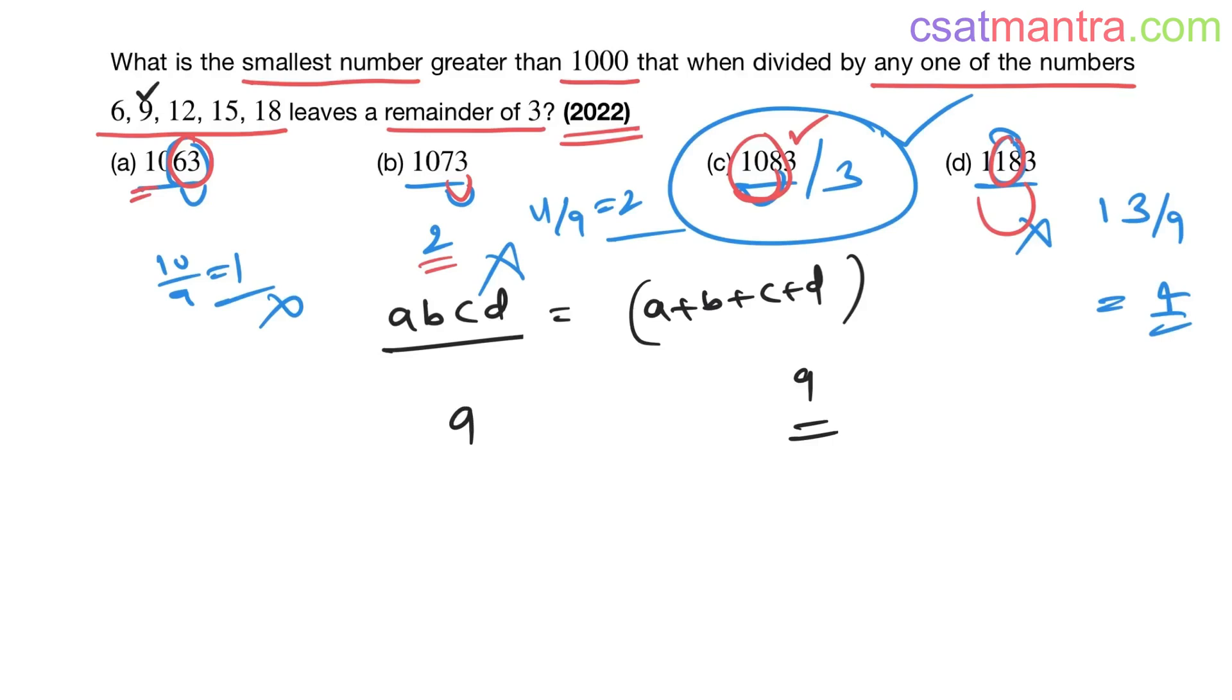Now find the LCM. 6 is 2 × 3, 9 is 3 × 3, that is 3². 12 is 4 × 3, no, 4 is 2² × 3. 15 is 3 × 5. 18 is 2 × 9, which is 2 × 3². Our LCM: maximum power of 2 is 2², maximum power of 3 is 3², and we have 5.